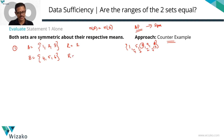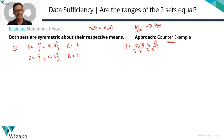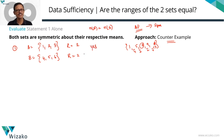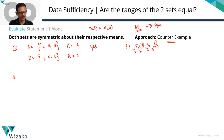The range of set B — let's pick 4, 5, 6 — is also 2. So I've picked two sets with the same range. They have the same number of elements, they are symmetric about the mean, and their range is the same. So the answer to the question is yes, if this were the example.